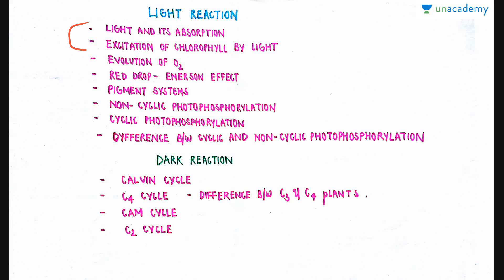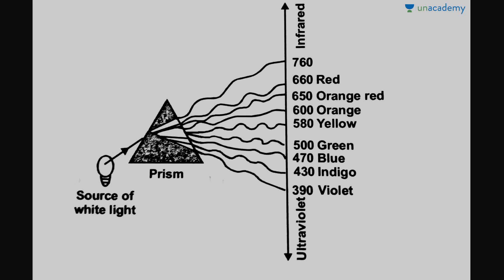In this video, I'll be talking about how light comes from the sun and how it is being absorbed by the plants, and further how the light is utilized to excite the chlorophyll pigment present in the plant, which further helps in the preparation of food through photosynthesis.